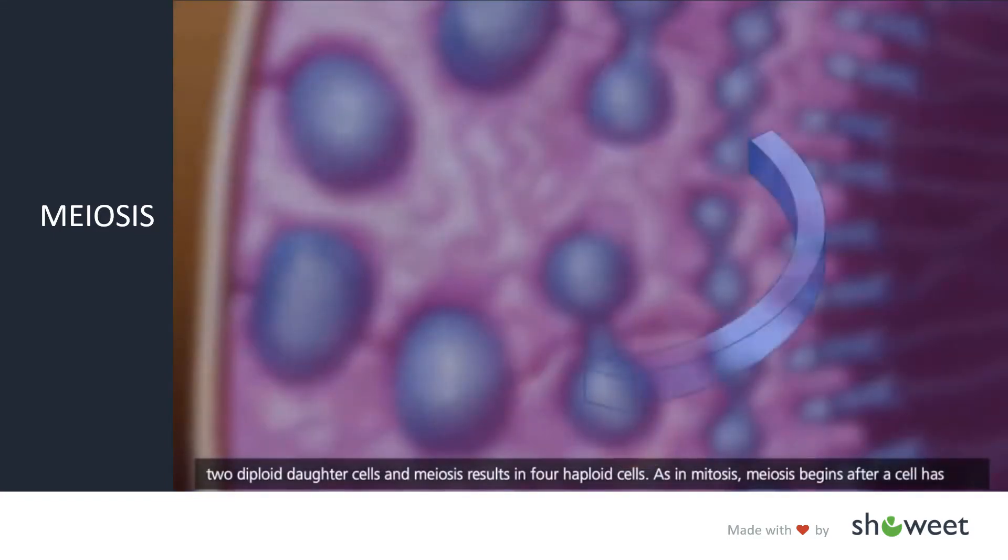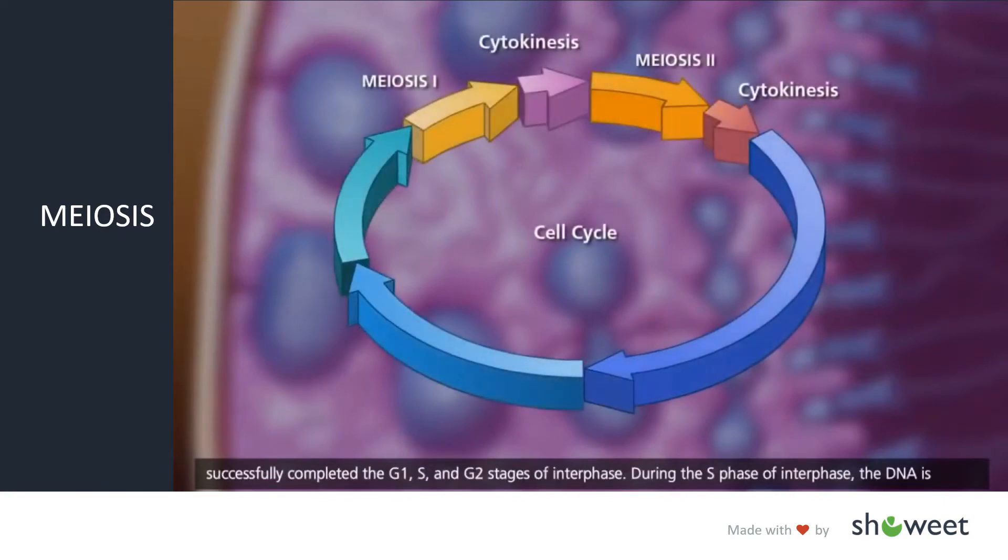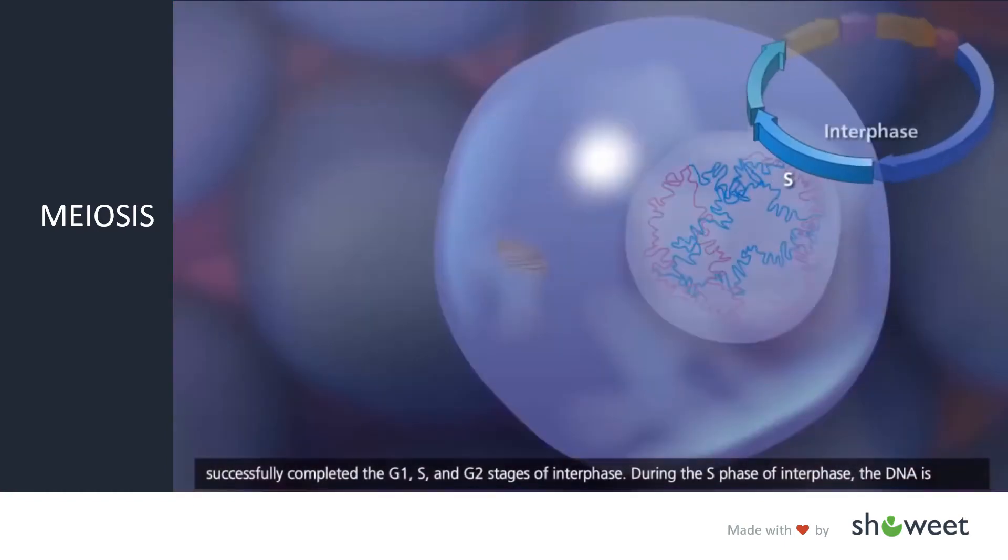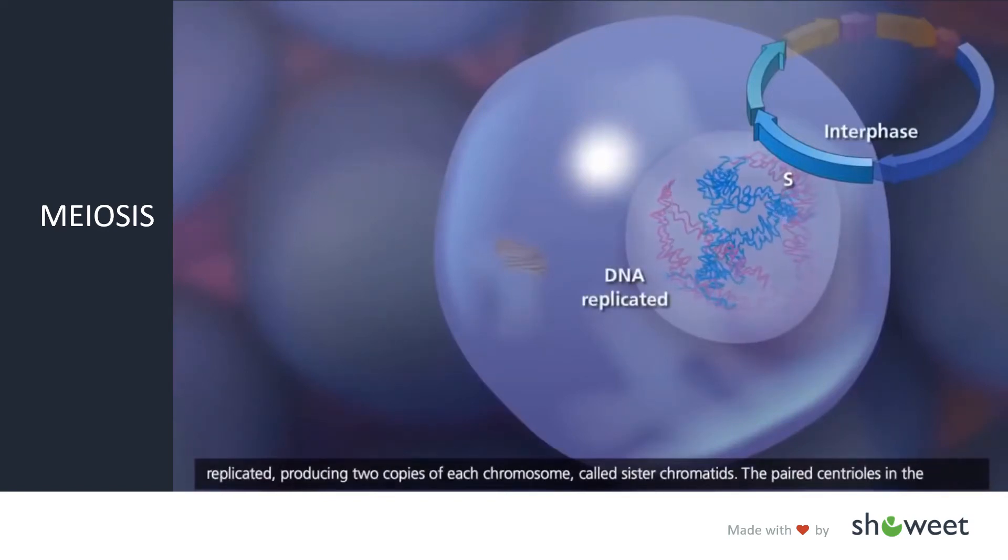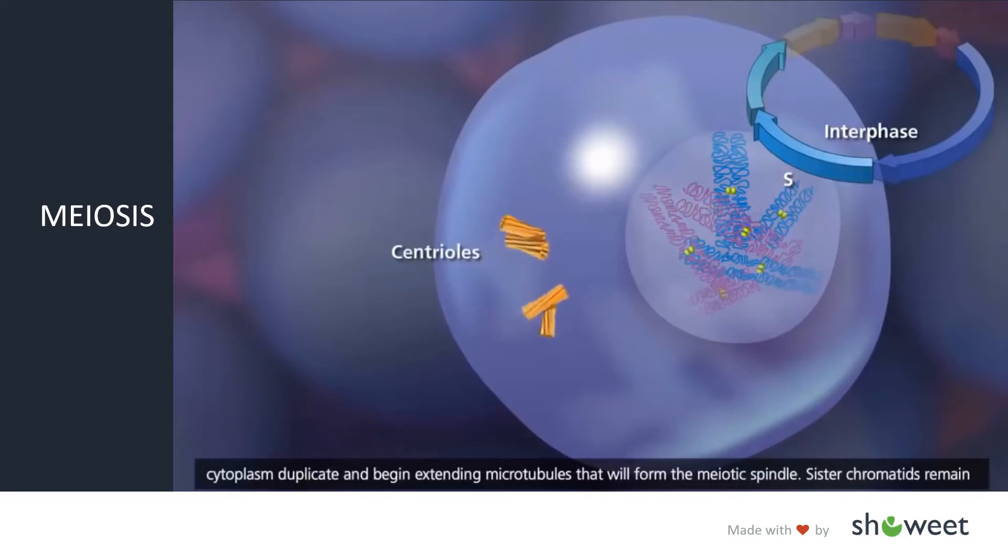As in mitosis, meiosis begins after a cell has successfully completed the G1, S, and G2 stages of interphase. During the S phase of interphase, the DNA is replicated, producing two copies of each chromosome called sister chromatids. The paired centrioles in the cytoplasm duplicate and begin extending microtubules that will form the meiotic spindle.